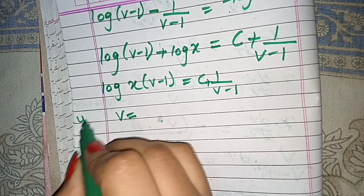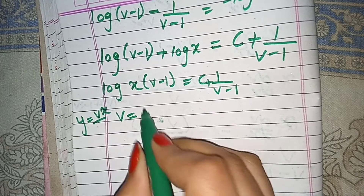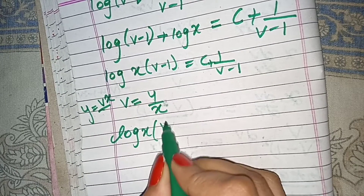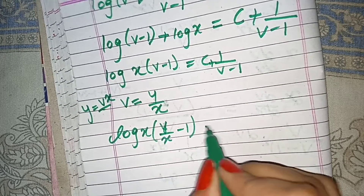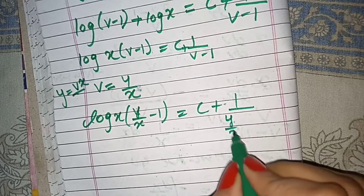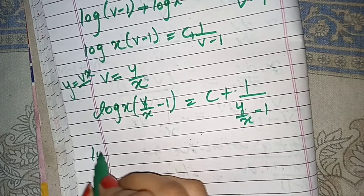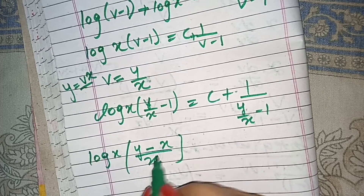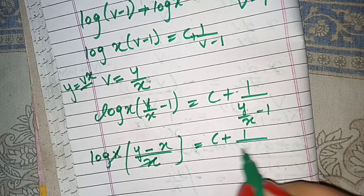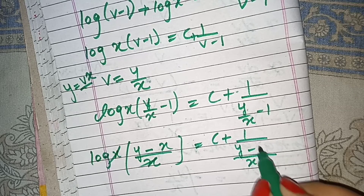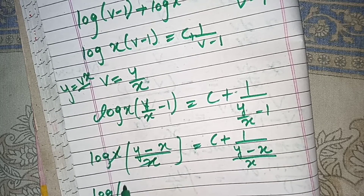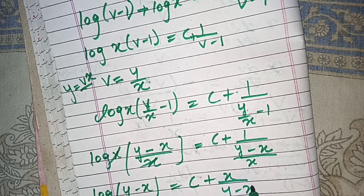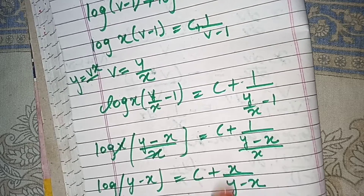Now v is equal to y over x. Substituting back: log[x times (y over x minus 1)] equals c plus 1 over (y over x minus 1). Simplifying y over x minus 1 as (y minus x) over x, we get log|y minus x| equals c plus x over (y minus x). This is our final answer.